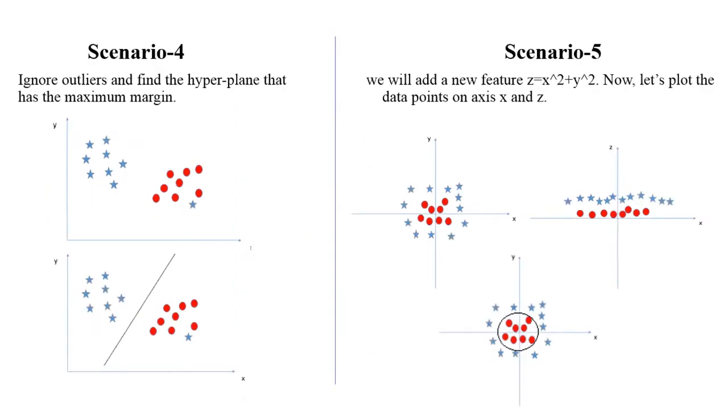For scenario four, SVM ignores outliers and finds the hyperplane that has the maximum margin. For scenario five, we add a new feature: z equals x squared plus y squared. This is the kernel trick.